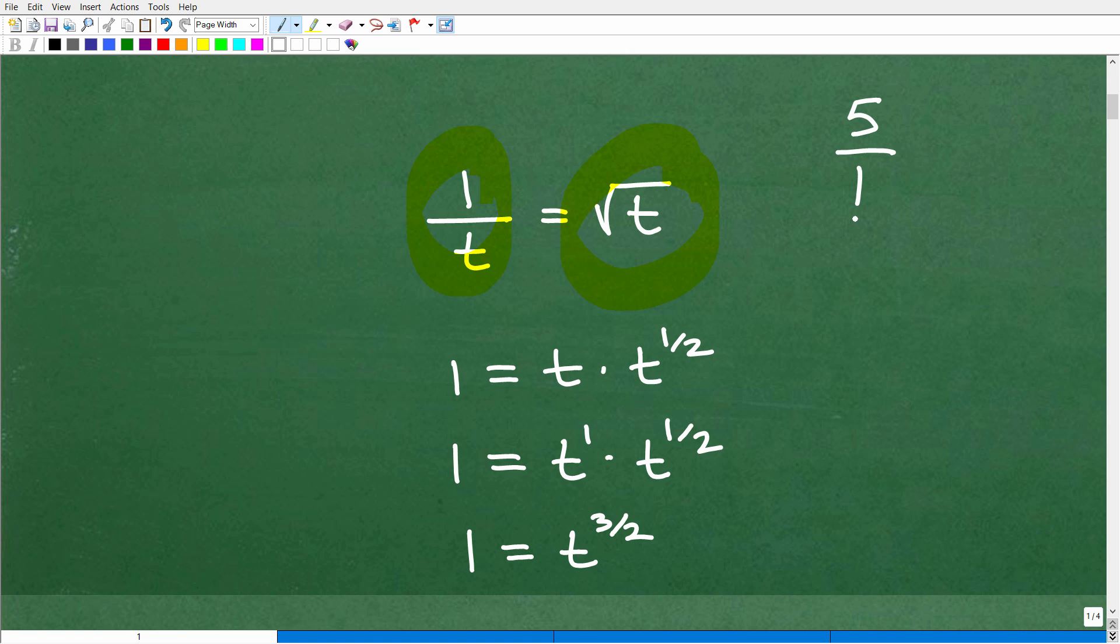So if I want to think of this as a fraction, I'm going to put this over 1. I basically have one fraction equal to another fraction, and this is what we call a proportion in mathematics. It's very nice when we have proportions because we can simply use the cross product - just cross multiply. So we got 1 times 1 is 1, and then t times the square root of t. So we have 1 is equal to t times the square root of t.